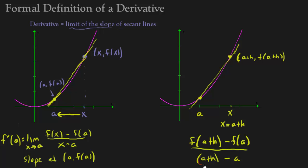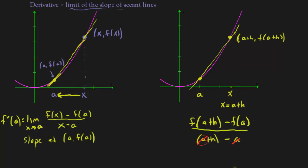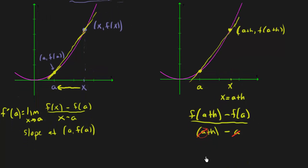We have an a right here. And then we have this a. So we have a minus a. So those actually cancel. And we're left with f of a plus h minus f of a, all over h.